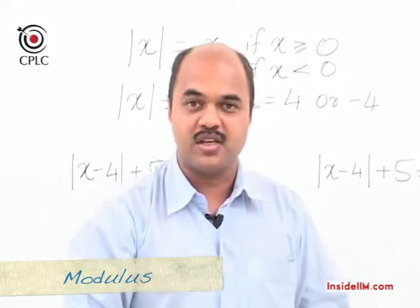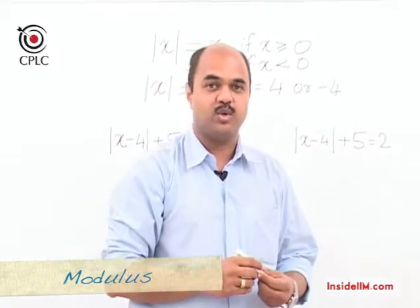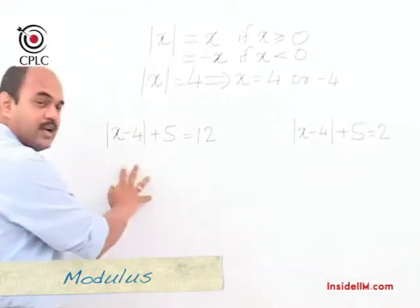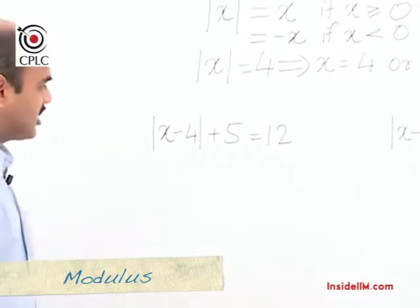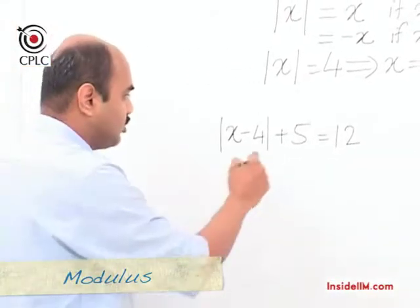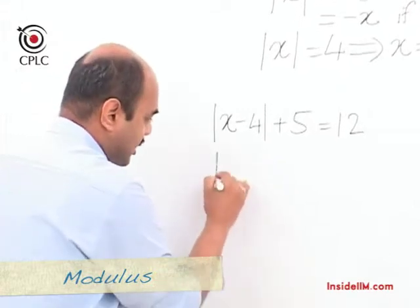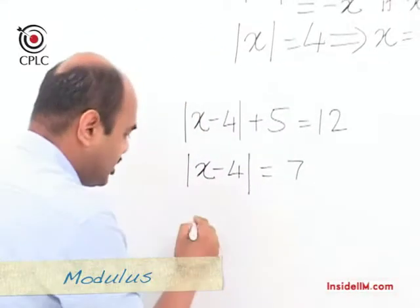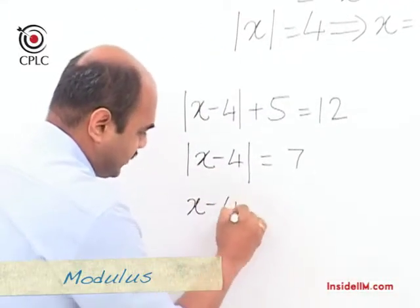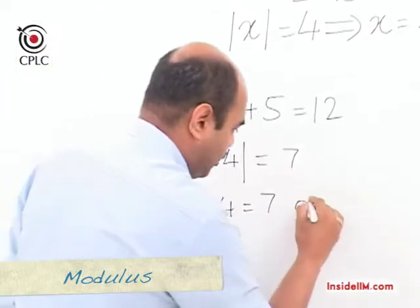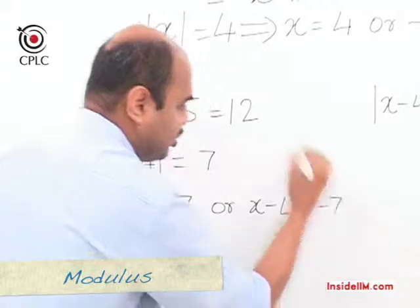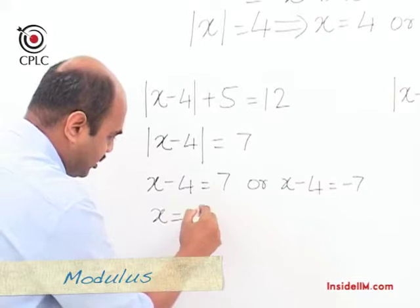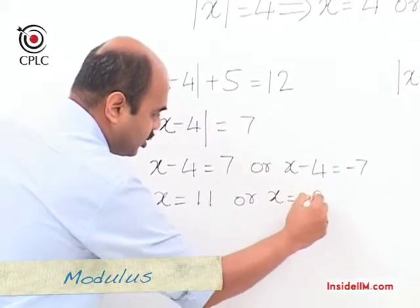This point is very often ignored, and hence there are errors when you solve problems. Let's take up some examples. Consider: mod of (x minus 4) plus 5 equals 12. The first step is mod of (x minus 4) equals 7, which means x minus 4 equals 7 or x minus 4 equals minus 7. Solving further, x equals 11 or x equals minus 3.